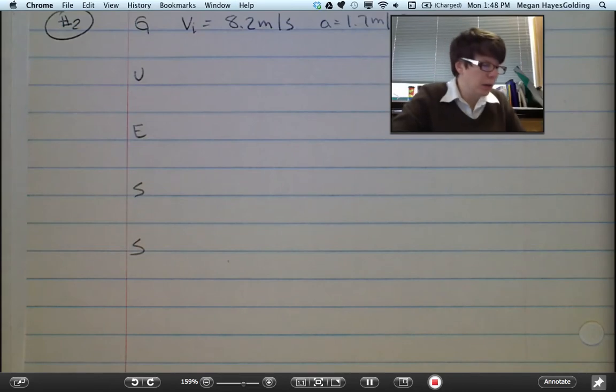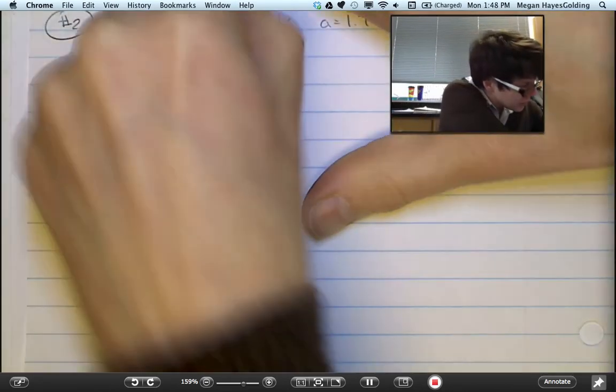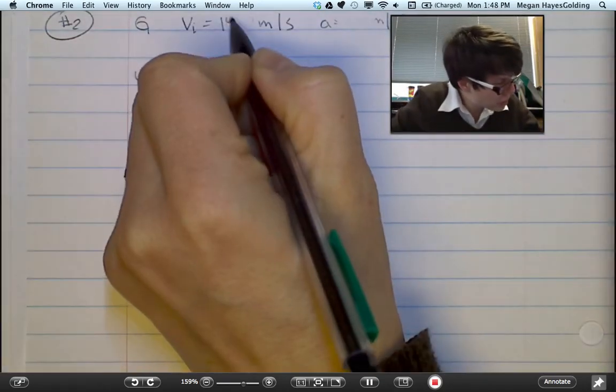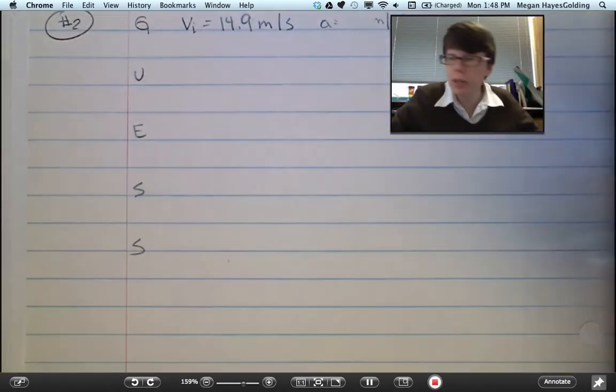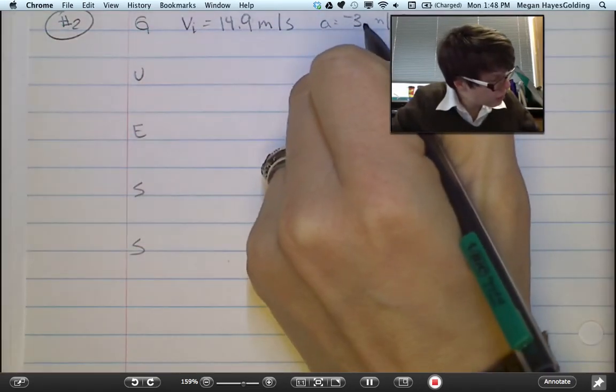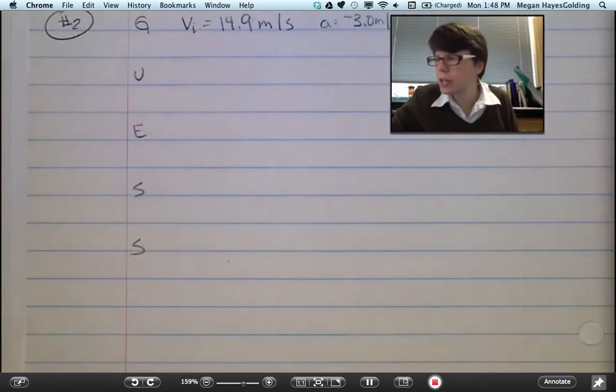Sorry guys, I'm reading from the problem above it. Initial speed: 14.9 meters per second. This is the snowmobile problem. You decelerate at a rate of negative 3 meters per second squared.